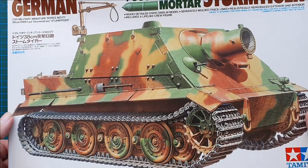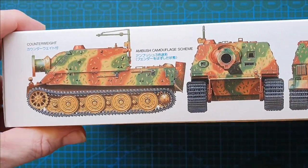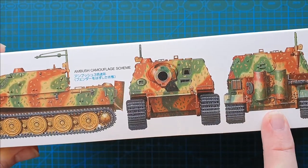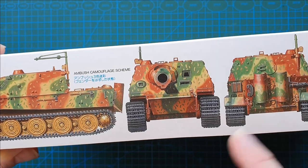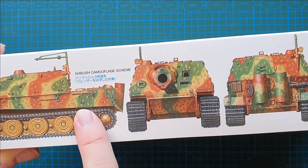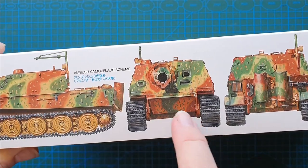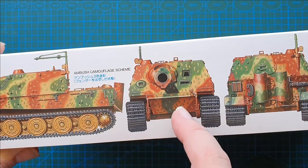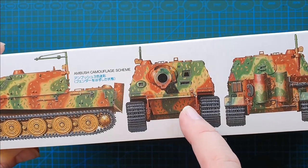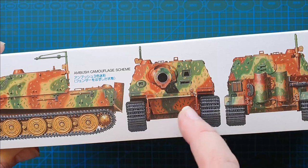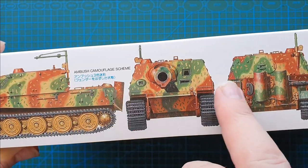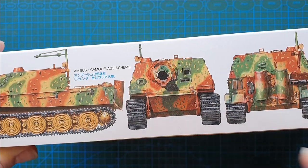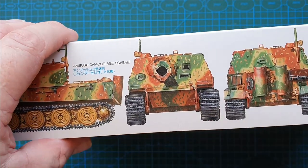On the side you'll see the Sturmtiger in three views. Standard all-over dark yellow, red brown, dark green camouflage, and it is in ambush pattern. Ambush pattern could be dots or dashes or almost anything just to break up the profile of these large color blotches.